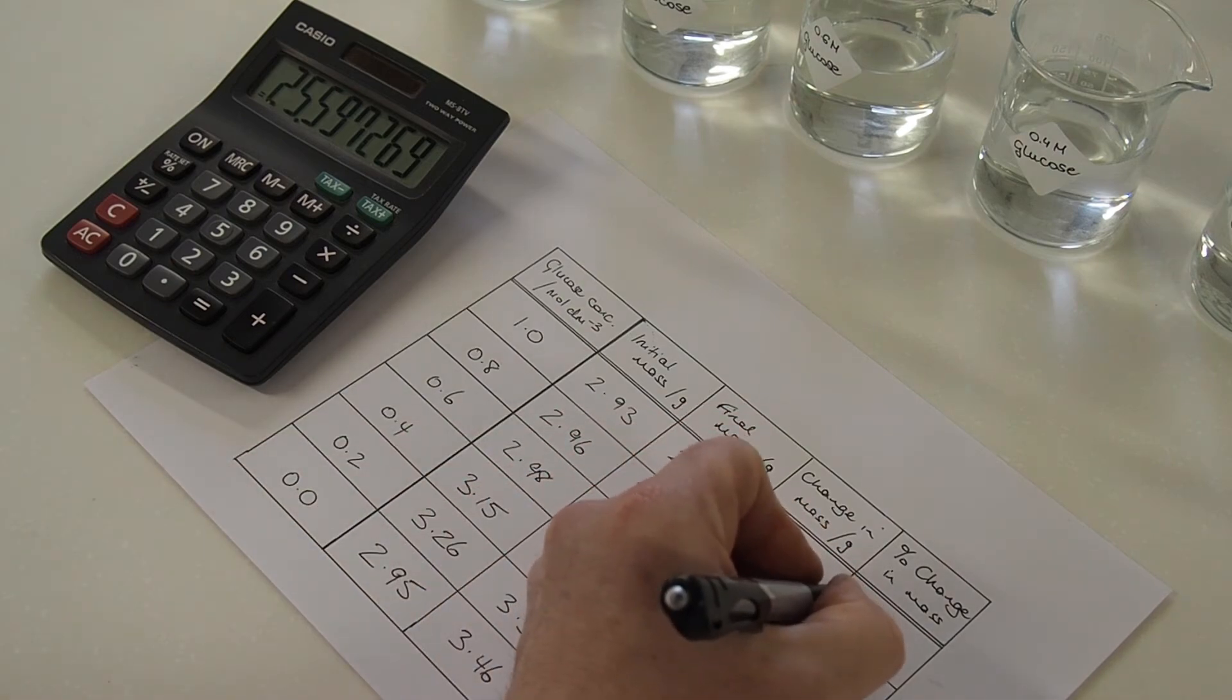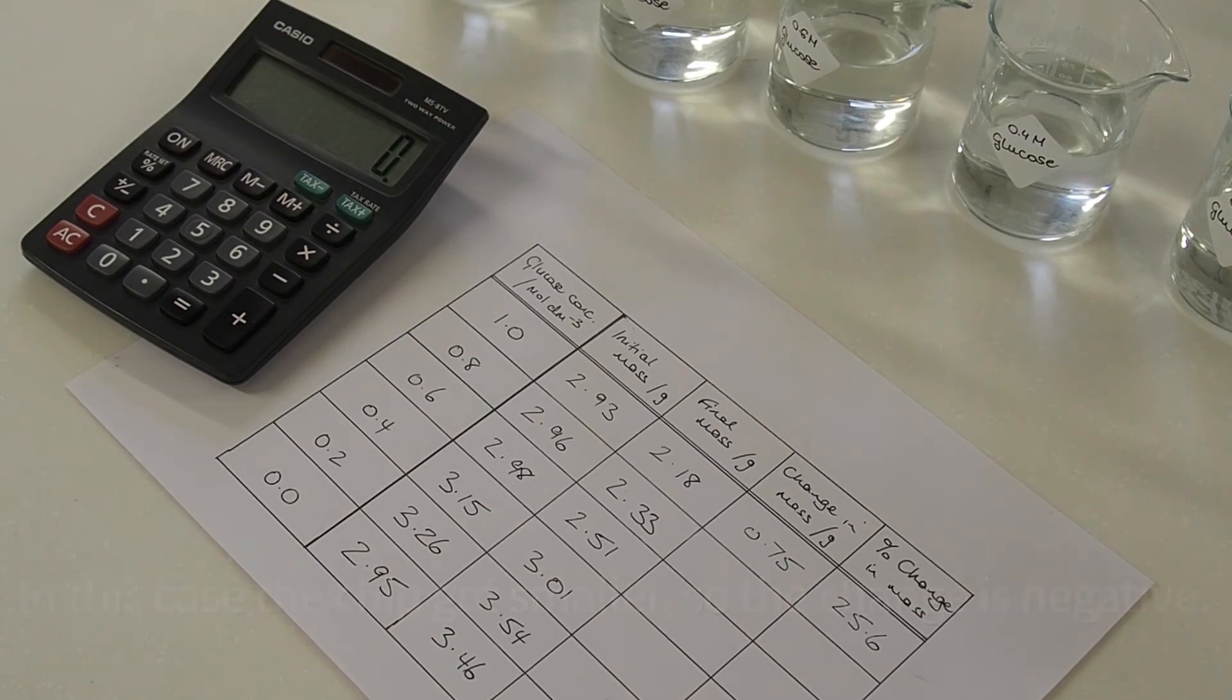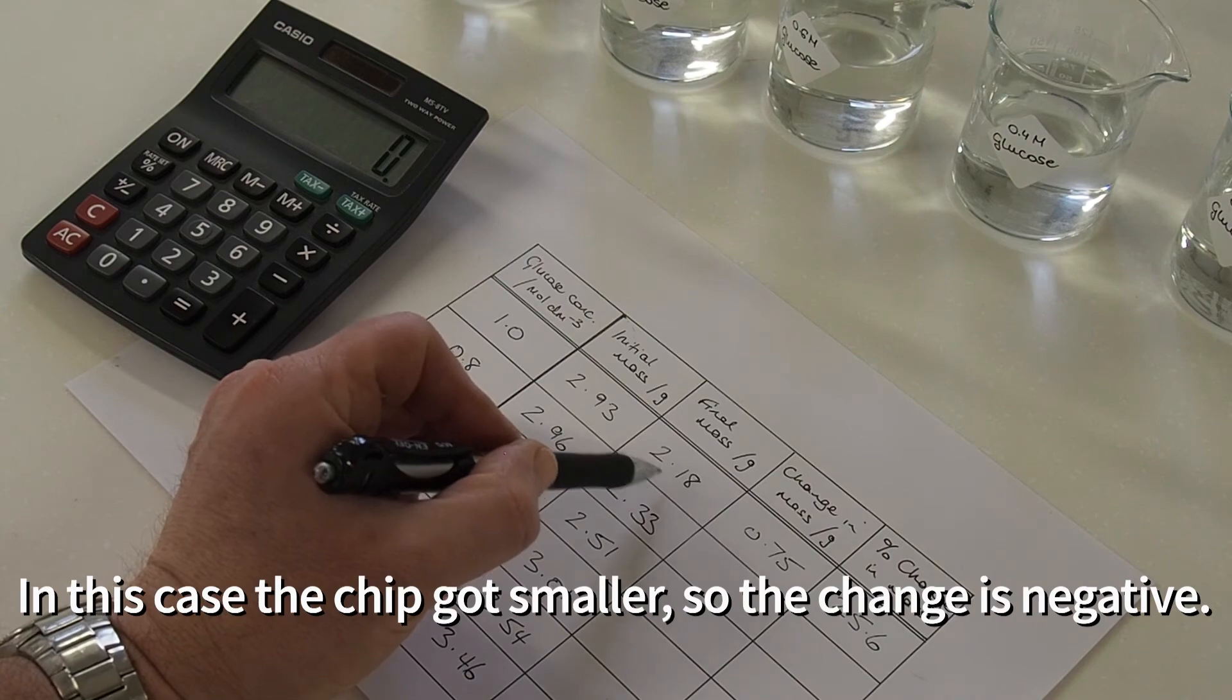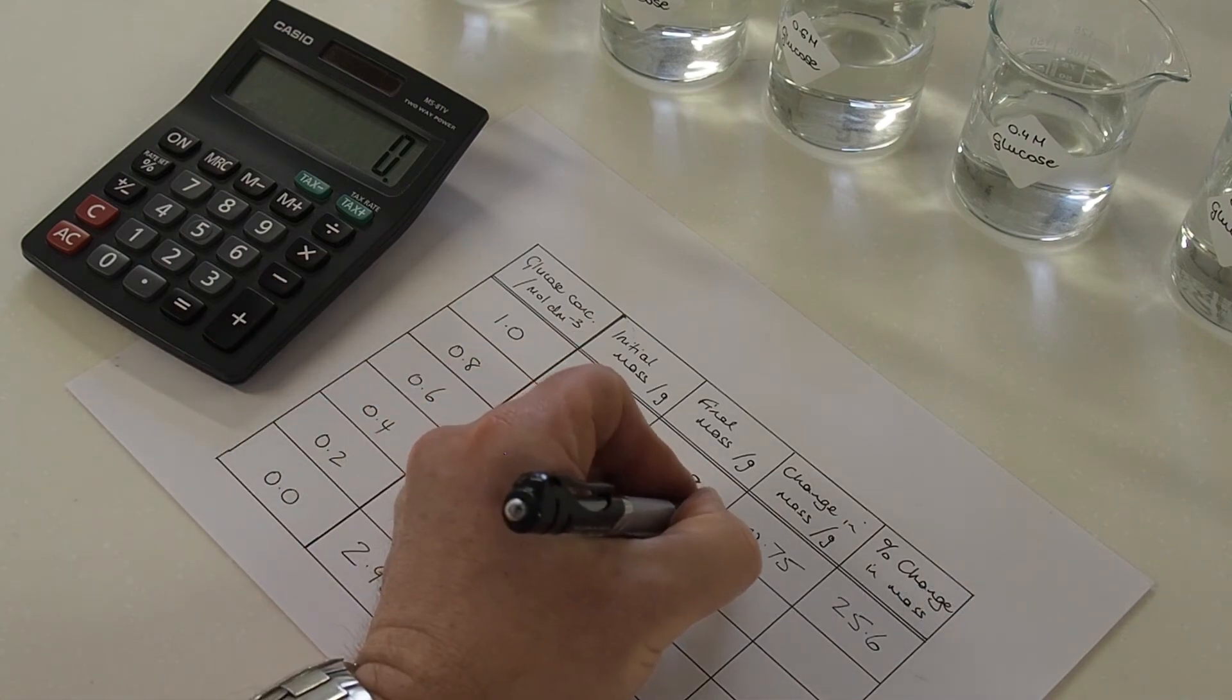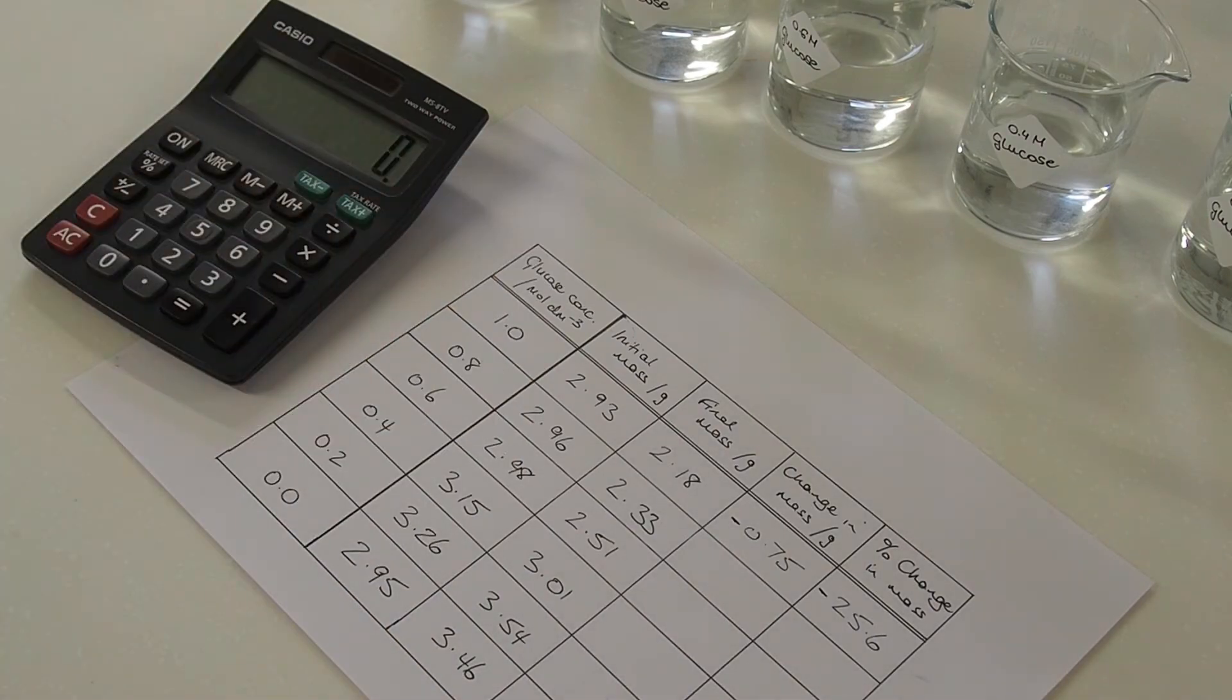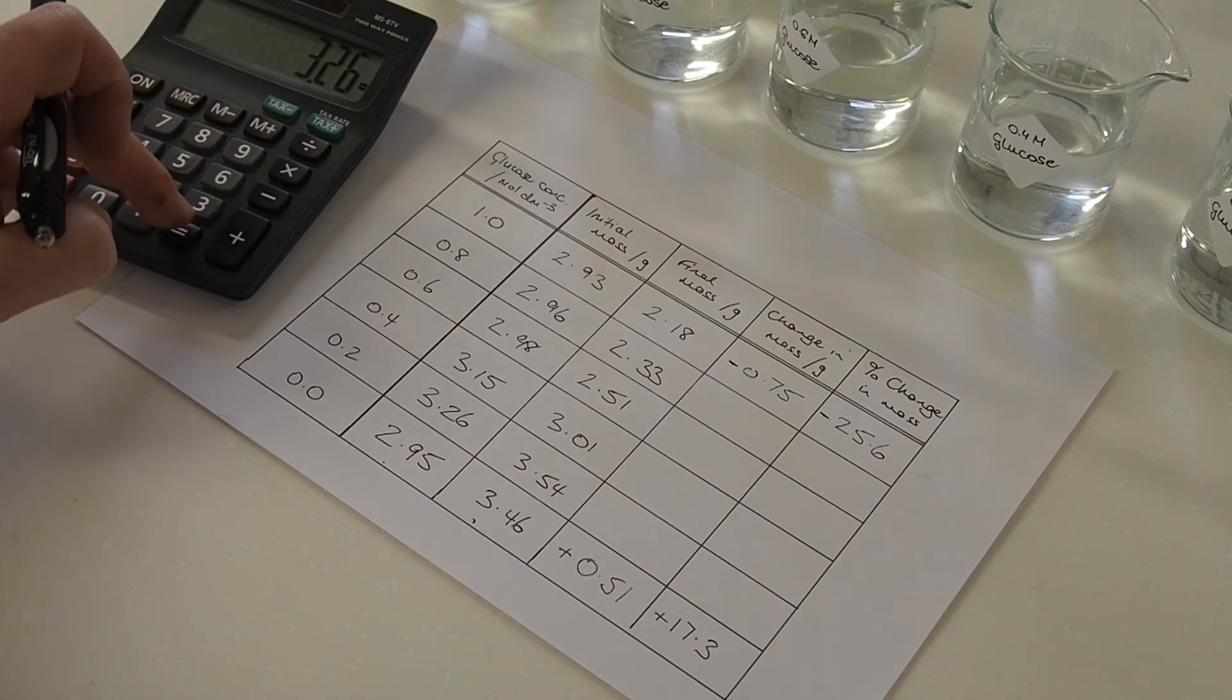I'm rounding to 1 decimal place here. Now, because this potato piece got smaller, the change in mass and the percentage change in mass are both negative. Where the block increases in mass, you end up with a positive percentage change in mass.